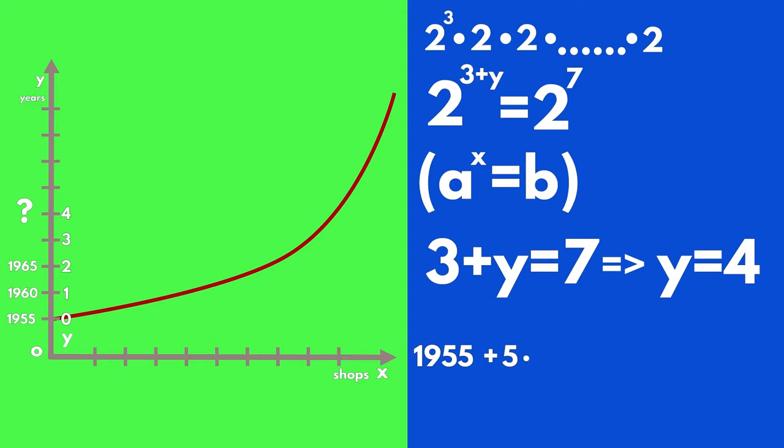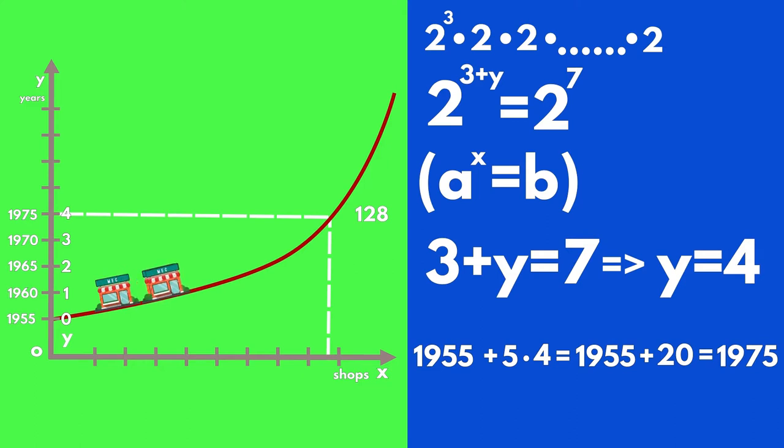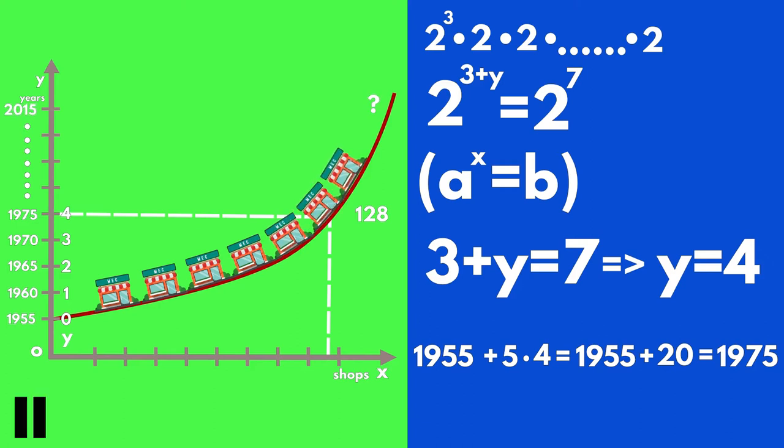Now that we know that there were 128 stores in 1975, if the rhythm of the business growth remained the same, how many stores do you think are open in 2015? You can pause the video to find the answer yourself.